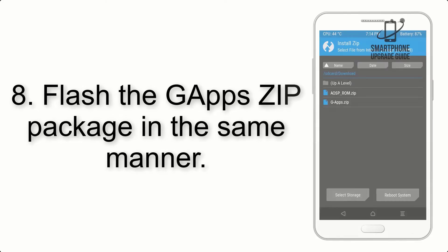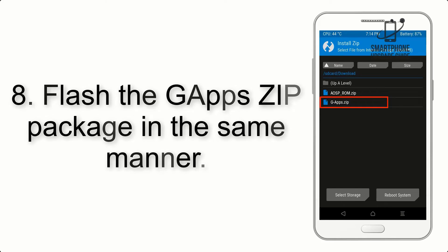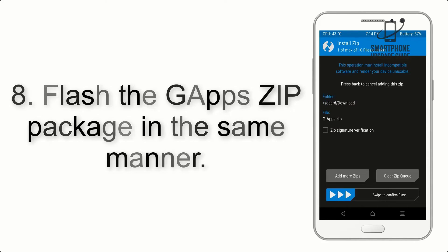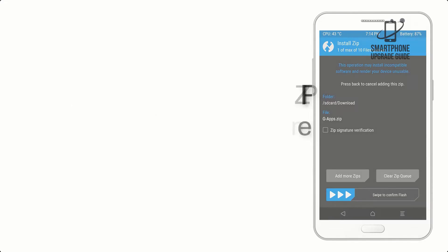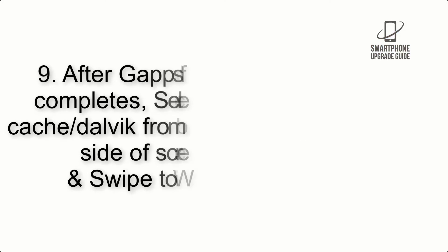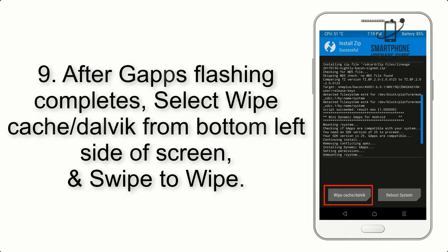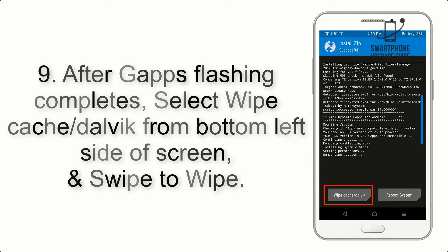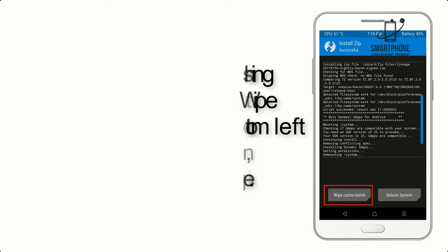Step 8: Flash the GApps zip package in the same manner. Step 9: After GApps flashing completes, select Wipe Cache and Dalvik from the bottom left side of the screen, and swipe to wipe.